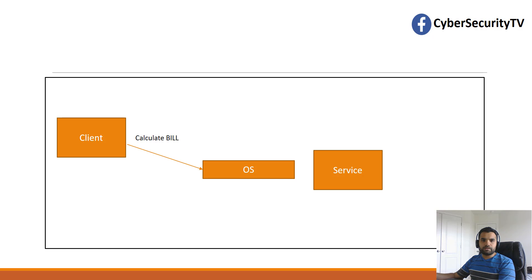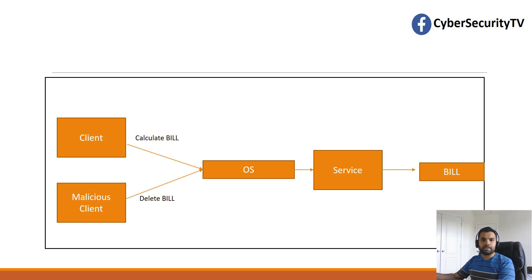Let's look at another example with a client, an OS, and a service. You are the client — a Windows or Mac user. What this client does is send a command to the OS to calculate a bill, and the service calculates the bill and outputs a document. A malicious client can instead ask to delete the bill. As a user, you do not have permission on that folder to delete the bill, but the operating system does. So when it calls the service, it passes its own OS credentials, which include access to calculate as well as delete the bill information — and so the bill gets deleted.